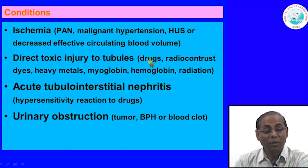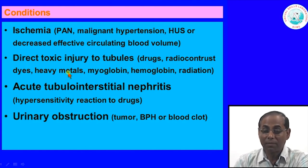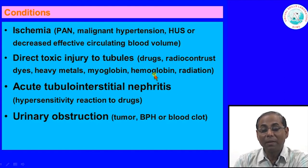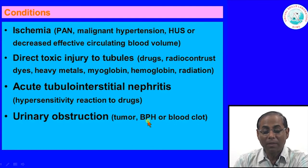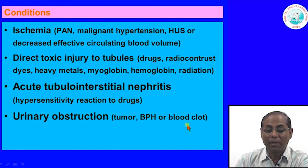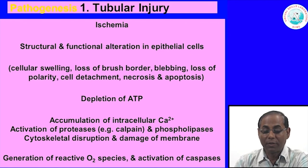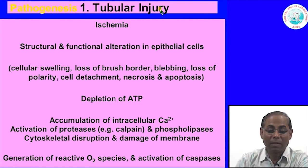Direct toxic injury to the tubules can happen secondary to drugs — there are several tubular-toxic drugs — radiocontrast dyes, heavy metals, myoglobin, hemoglobin, and radiation. Mismatched blood transfusion can also cause tubular injury. Acute tubular necrosis may also be due to a hypersensitivity reaction to drugs, and urinary tract obstruction from BPH, tumors, blood clots, and other causes.